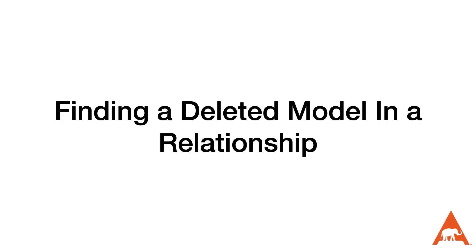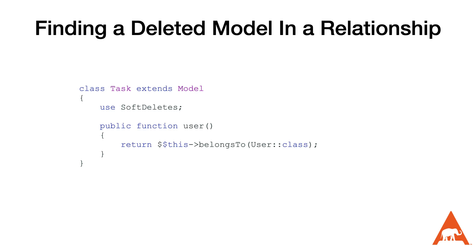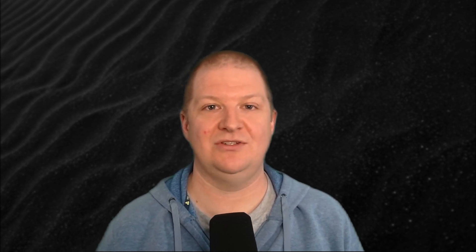One of the gotchas that we're going to have to keep our eyes out for is when we have a model that defines an Eloquent relationship to a soft deleted model. Normally we would just define the relationship like the code on screen. If the user associated with this task is soft deleted and we attempt to access it through the relationship, the function is just going to return null. This may be the correct logic for your application, but if we actually want to see that person's information, the solution is to throw the with trashed function in there, which will then cause it to return a result.